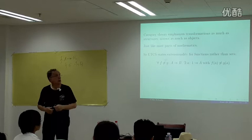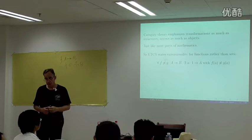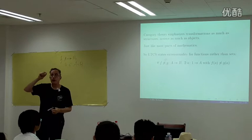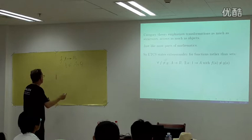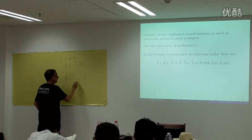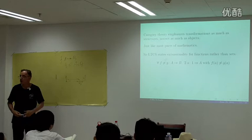Instead of saying two sets are equal if they have all the same elements, we say two functions between the same pair of sets are equal if they have all the same values. It's actually true in our definition that two sets are equal if they even have one element in common, because an element of a set is a function from 1 to that set — so a function from 1 to A can't also be a function from 1 to B unless A equals B.